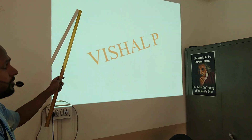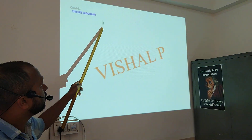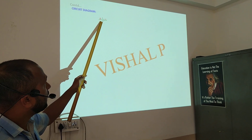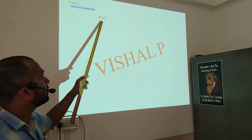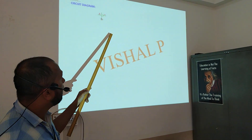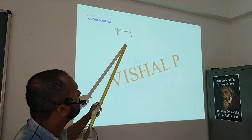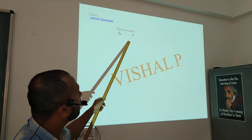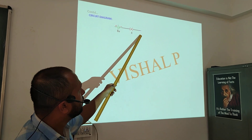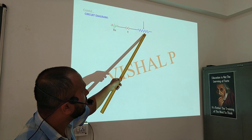Next, here is the circuit diagram. The circuit diagram is very important in this. First, this is the battery — it has two terminals, a positive terminal and a negative terminal. You will connect this battery to the plug key. This is the key. Next, the key is connected to the rheostat. This is the symbol of the rheostat.